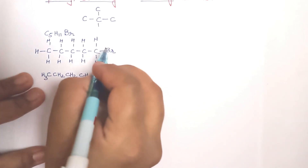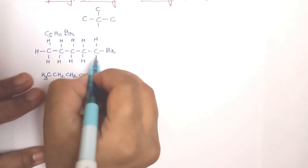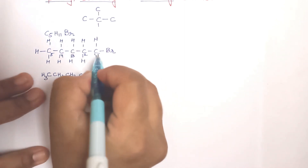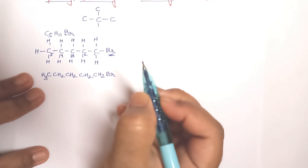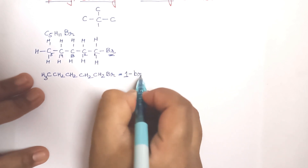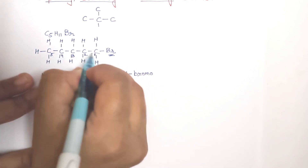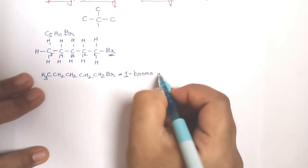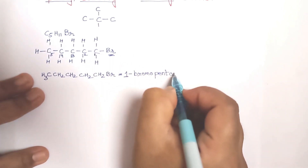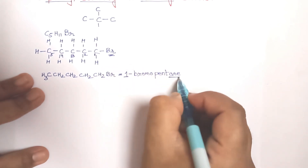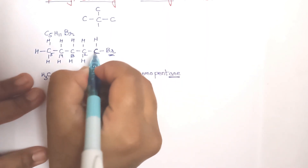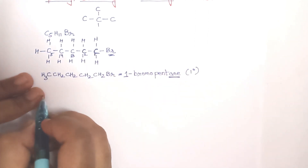The carbon attached to the halogen should have the least number, so we number from the bromine end: 1, 2, 3, 4, 5. The halogen is at carbon 1, so we write 1-bromo. There are 5 carbon atoms, so we write 'pent'. All bonds are single bonds, so 'ane'. The name of this compound is 1-bromopentane. The carbon bearing bromine is attached to only one other carbon atom, so it is a primary compound.